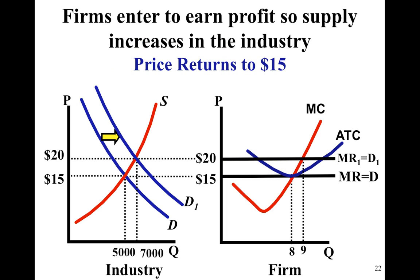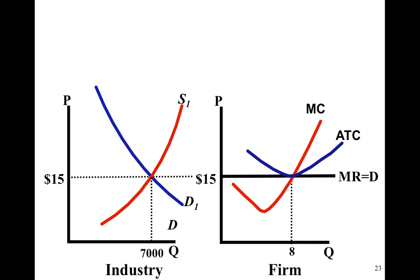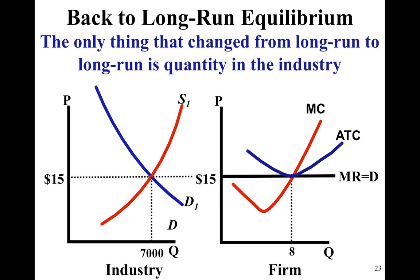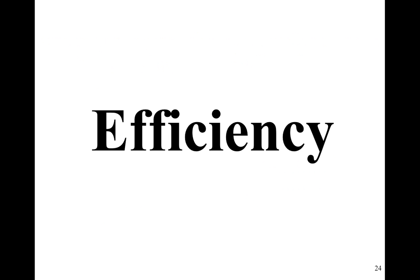Eventually, price will return to long-run equilibrium because those profits cause firms to want to enter the industry. As firms enter, industry quantity goes up again but price comes back down, so the marginal revenue curve for the firm eventually falls back to its original level — fifteen dollars in this example.